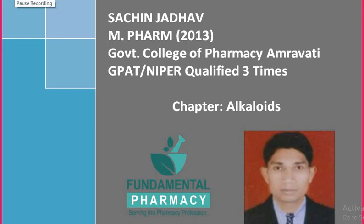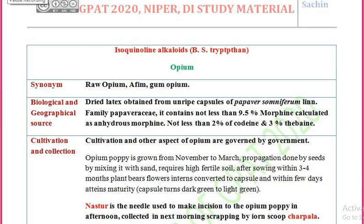Hello friends, welcome to Fundamental Pharmacy. Today we are going to discuss the opium alkaloids. Opium alkaloids are important for GPAT, NIPER, drug inspector, pharmacist, and other pharma competitive examinations. Opium alkaloids are a class of isoquinoline alkaloids which are biosynthesized from the tyrosine amino acid.